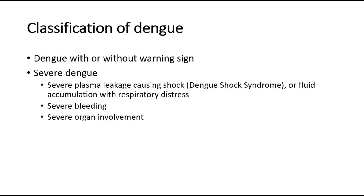For classification of dengue, we can classify it into dengue with or without warning signs, and also severe dengue. Severe dengue is defined by severe plasma leakage causing dengue shock syndrome, or plasma leakage causing fluid accumulation such as pleural effusion causing respiratory distress. Other criteria for severe dengue include severe bleeding or severe organ involvement — for example, involving the liver, central nervous system, heart, or other organs.